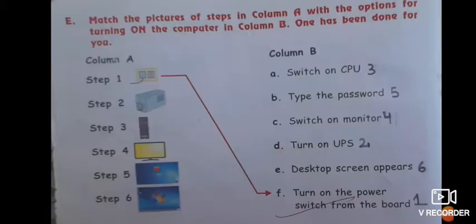Next is E, match the pictures of steps in column A with the options for turning on the computer in column B. One has been done for you. So there are some points which you need. This is match ups, so no need to put the lines, you need to put the numbers. And in this there are the steps of turning on the computer. For one, first one they have done for you, so first step is turn on the power switch from the board.